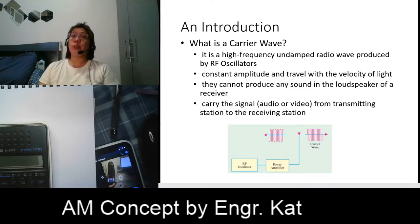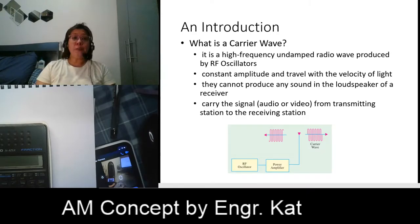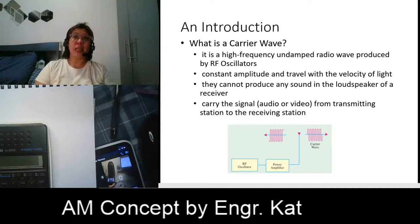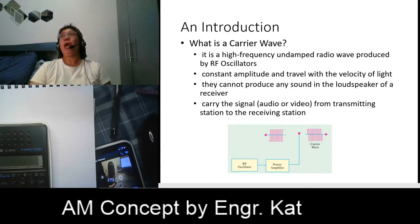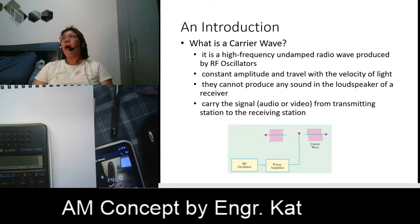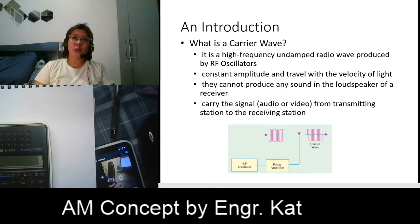Your carrier wave has a constant amplitude and travels with the velocity of light — 3 × 10⁸ meters per second. They cannot produce any sound in the loudspeaker of a receiver. For example, if you have a radio or television receiver, the carrier waveform itself is inaudible to the viewers or listeners, because there is no information in the carrier alone — the information is your low frequency signal.